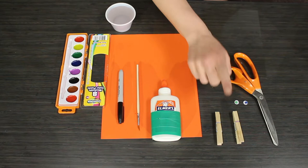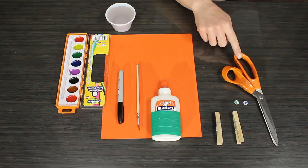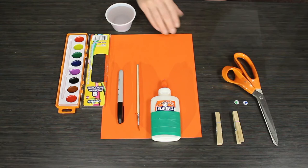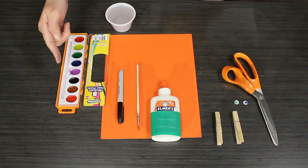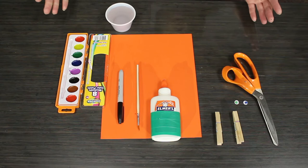The materials we'll need for today's project are wooden clothespins, wiggly eyes or googly eyes, scissors, colored paper, and transparency paper, white glue, a paintbrush, a black permanent marker, paint, and a cup of water.